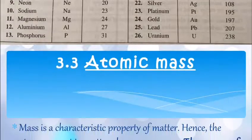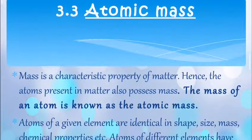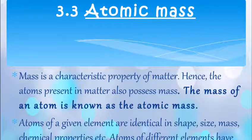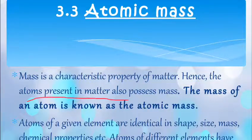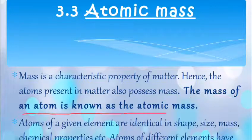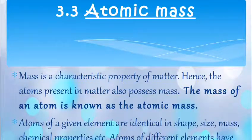What is atomic mass? Mass is a characteristic property of matter, hence atoms present in a matter also possess mass. The mass of an atom is known as atomic mass. Now atoms of a given element are identical in shape, size, mass, chemical property, etc.